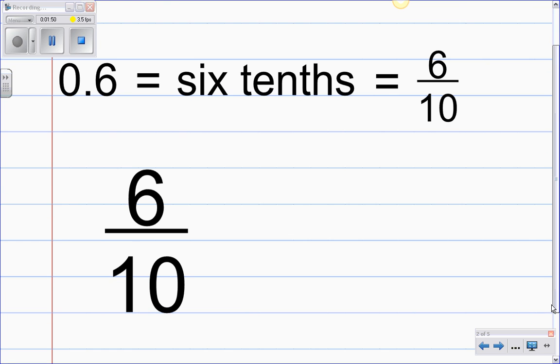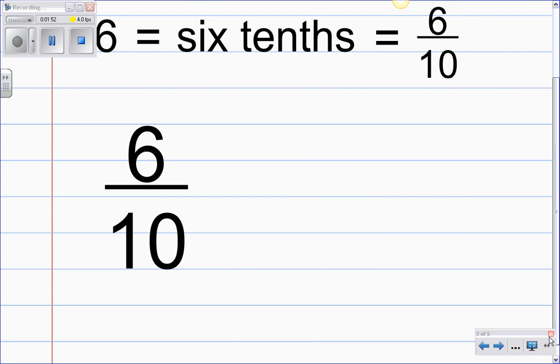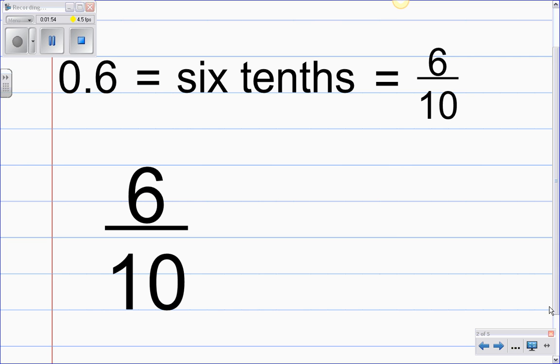Now we need to reduce this fraction so we need to remember our rules about reducing fractions. Whatever we reduce our fraction by it has to be the same on the top and the bottom of the fraction. So we need to think about what is the greatest common factor between the numbers 6 and 10.